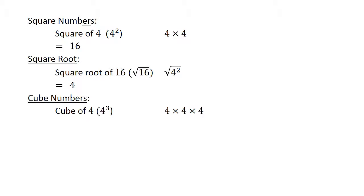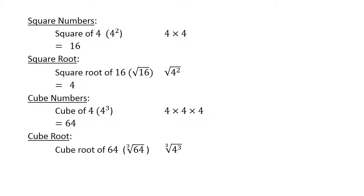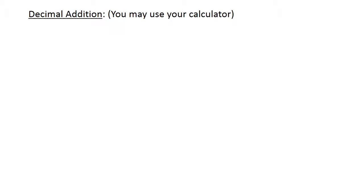The cube of 4 equals 64. And the cube root of 64 equals 4. Decimal addition.